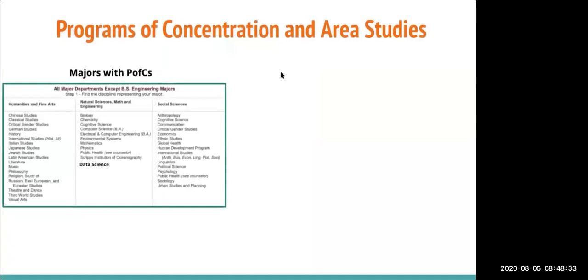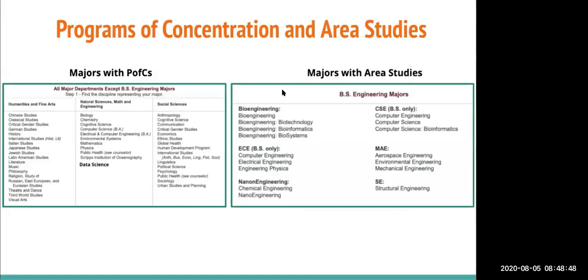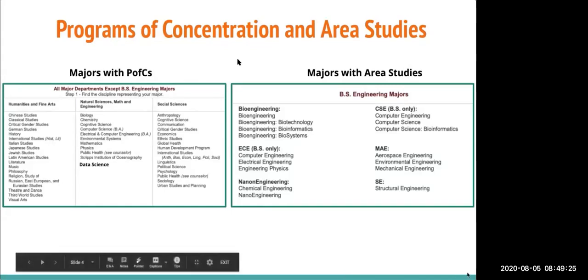As a Warren student, you'll be required to complete either two programs of concentration — or PFCs — or two area studies. Whether you complete PFCs or area studies is determined by your major. These charts, also found on the Warren website, are immensely helpful in determining your GE requirements. If you are pursuing a BS engineering major, you will need to complete area studies in areas non-contiguous to your engineering major.